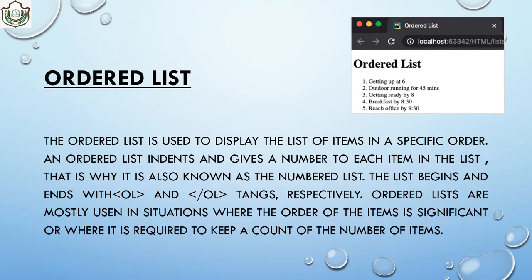The ordered list begins and ends with the ol and slash ol tags. Ordered lists are mostly used in situations where the order of the items is significant, or where it is required to keep a count of items. For example, a daily routine: getting up at six, outdoor running for 45 minutes, and so on — all in sequence, one after another.